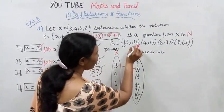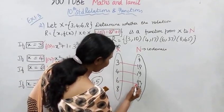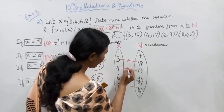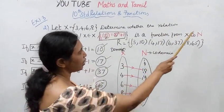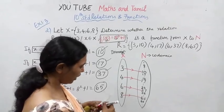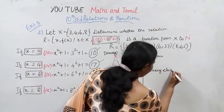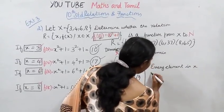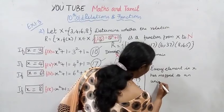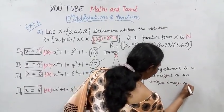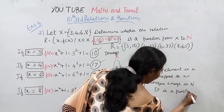Mapping: 3 maps to 10, 4 maps to 17, 6 maps to 37, 8 maps to 65 — using arrows. This is the function from X to N. Every element in X has a unique image in N. Therefore, it is a function.